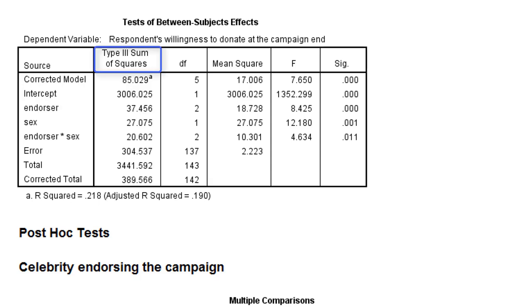Just take the between groups sum of squares for an effect and divide it by the total sum of squares.